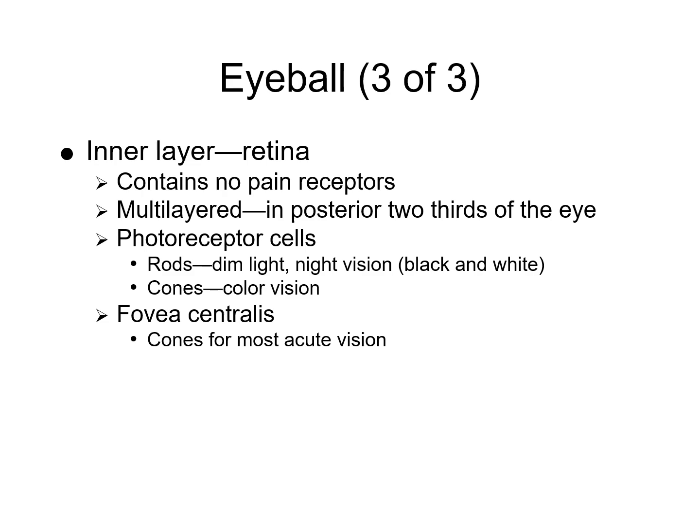Color blindness is common in males and results from a deficit of one type of cone caused by an abnormal gene on the X chromosome — a sex-linked recessive gene. There are three types of cones named for their color: blue, red, and green. The cones are more prevalent in the macula because that is the part of the retina responsible for central vision.